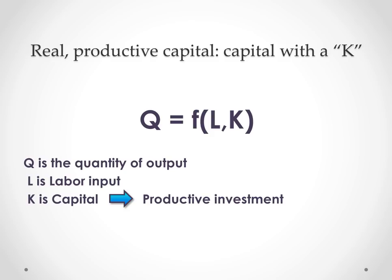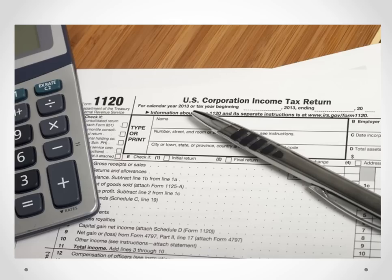Everybody should hope for more capital with a K, meaning productive investment. Economists know it's best not to punish capital by taxing it heavily. But U.S. policy already encourages capital with a K — it isn't taxed, because when a company spends money on productive capital, it already deducts that spending from income, either immediately or by depreciating it over time. And it's a fine idea to encourage more productive capital by allowing companies to deduct new capital spending immediately.